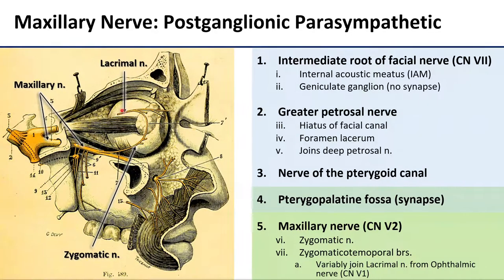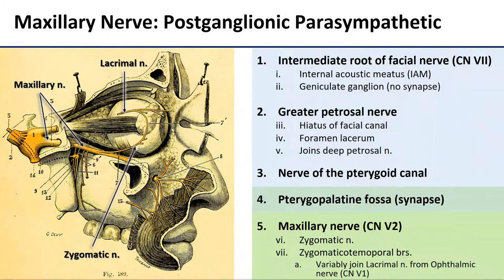Those are either going to carry that innervation directly up to the lacrimal gland, or they're first going to take a little detour to the lacrimal nerve, which is a branch of the ophthalmic division of the trigeminal nerve, coming right up through there. This appears to be variable between individuals, and investigations of how nerve fibers travel along these nerves are still in their early stages, so we're not sure which is more common.